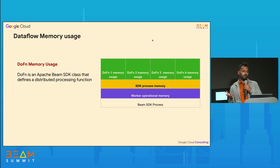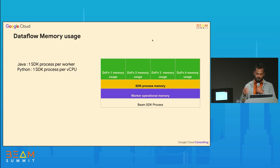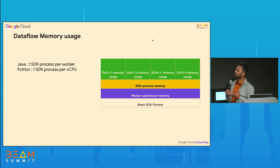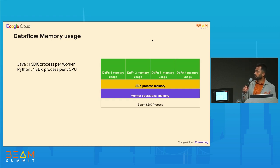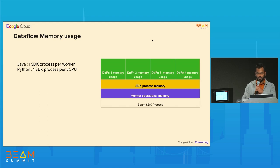The number of DoFns on the worker depends on the number of threads the runner creates. The default values for Dataflow may not be the same as for other runners. All of this is per SDK process — for Java there is one SDK process per worker, and for Python there is one SDK process per vCPU, so be mindful of how memory usage scales.